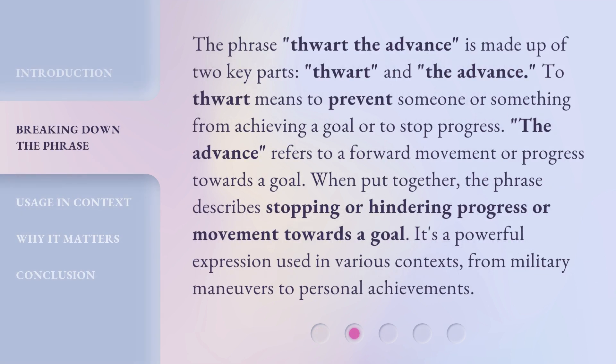The phrase 'thwart the advance' is made up of two key parts: thwart and the advance. To thwart means to prevent someone or something from achieving a goal, or to stop progress. The advance refers to a forward movement or progress towards a goal. When put together, the phrase describes stopping or hindering progress or movement towards a goal. It's a powerful expression used in various contexts, from military maneuvers to personal achievements.